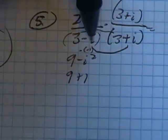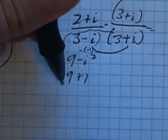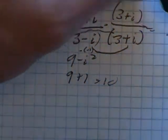Notice my middle term drops out: negative three i, positive three i. So on the bottom, in the denominator, I have ten.